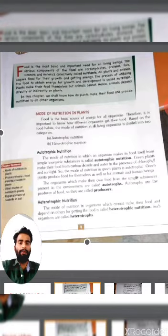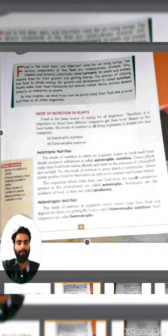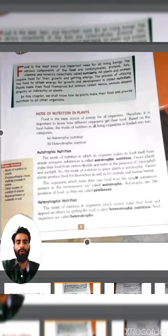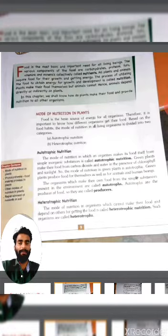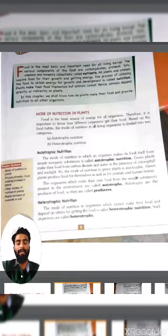There are two types of nutrition modes. The first is autotrophic nutrition. This is the mode of nutrition in which an organism makes its food itself from simple or inorganic substances. Green plants make their food from carbon dioxide and water in the presence of chlorophyll and sunlight. So the mode of nutrition in green plants is autotrophic nutrition. Green plants produce food for themselves as well as for animals and human beings.